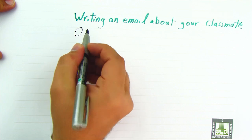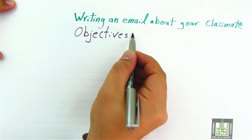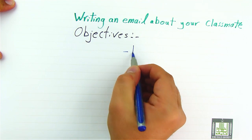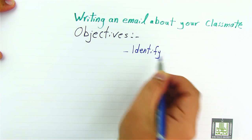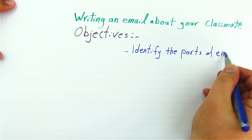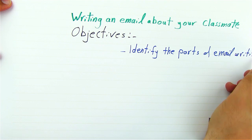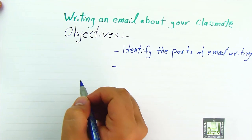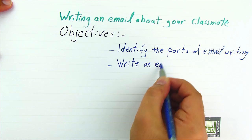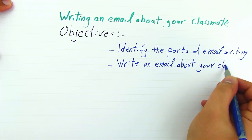Let's see first the objectives that students can fulfill by the end of this lesson. Number one, students will be able to identify the parts of email writing. Second, students will be able to write an email about your classmate.